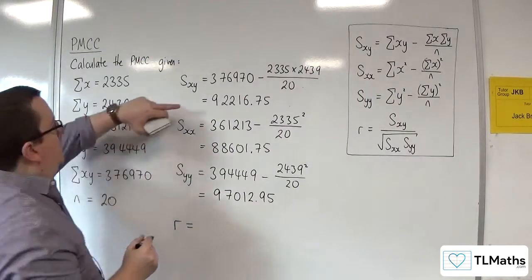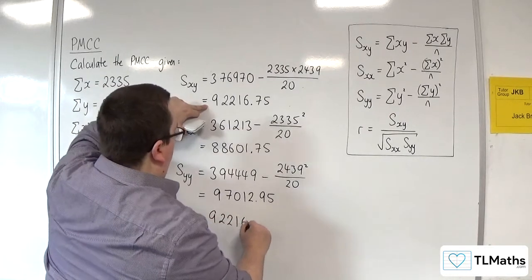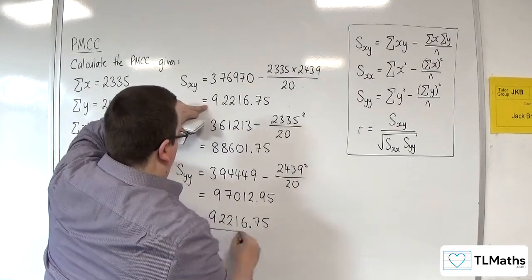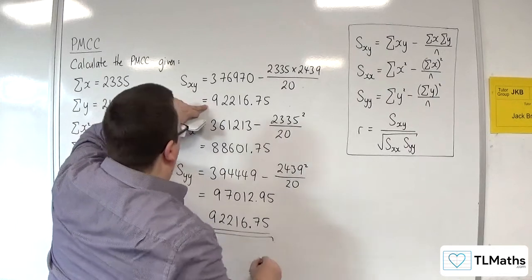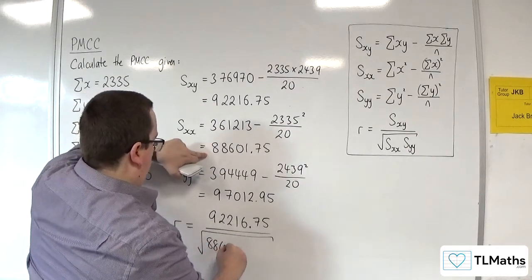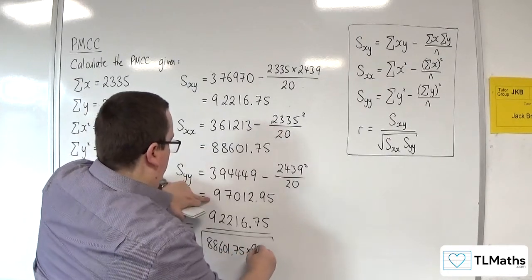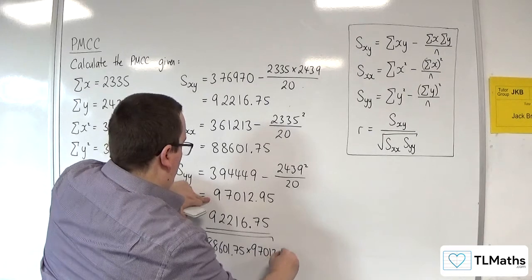So, R is 92216.75 divided by the square root of 88601.75 times by 97012.95.